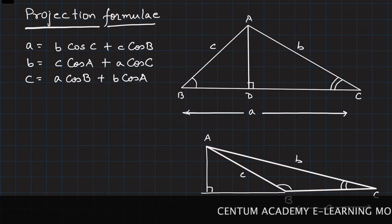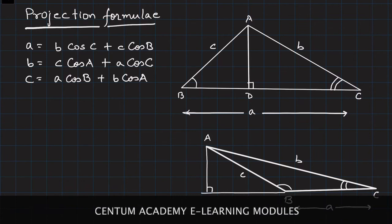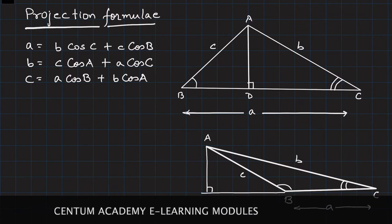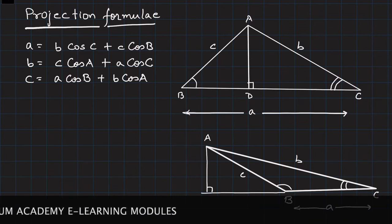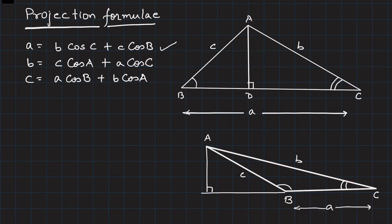The projection formula talks about a triangle. In triangle ABC, let small a, small b, and small c be the three sides opposite to angles A, B, and C respectively. Then: a = b·cos C + c·cos B; b = c·cos A + a·cos C; and c = a·cos B + b·cos A.